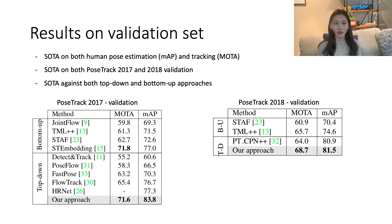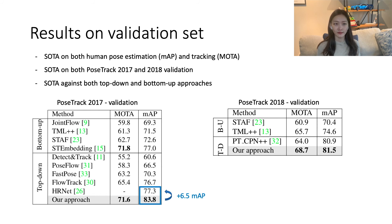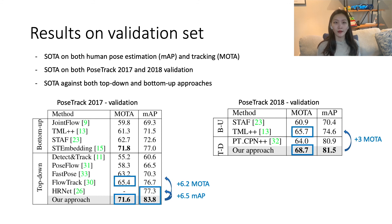Our approach achieves state-of-the-art results on both human-pulse estimation and tracking tasks, on both validation sets of PoseTrack 2017 and 2018 datasets, and against both top-down and bottom-up approaches. In some cases, the improvement over the state-of-the-art is substantial. For example, we observe an improvement of 6.5 MAP on PoseTrack 2017 and a three-point MOTA increase on PoseTrack 2018. When compared to only top-down approaches, the improvement in MOTA is even more significant, up to 6.2 on PoseTrack 2017 over the winner of the last PoseTrack challenge.